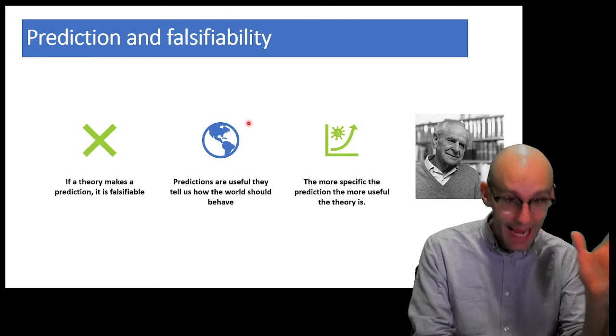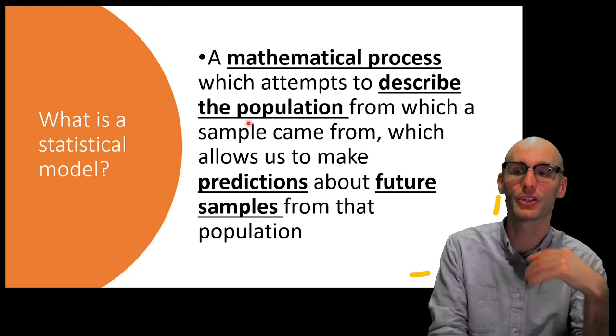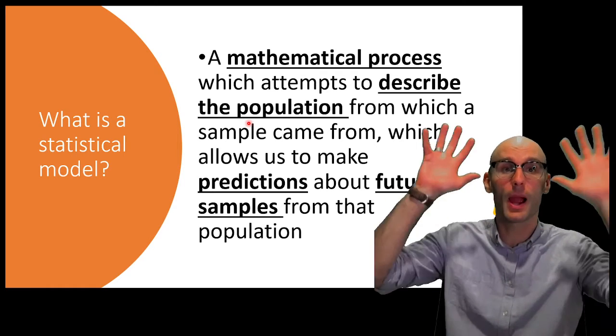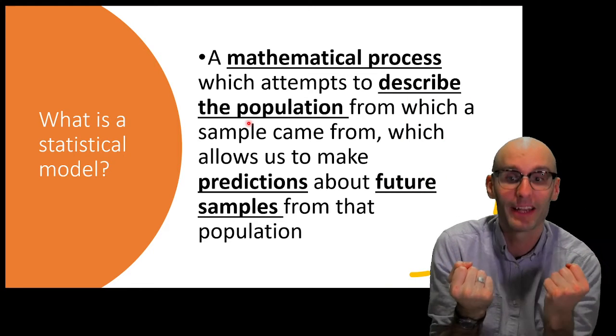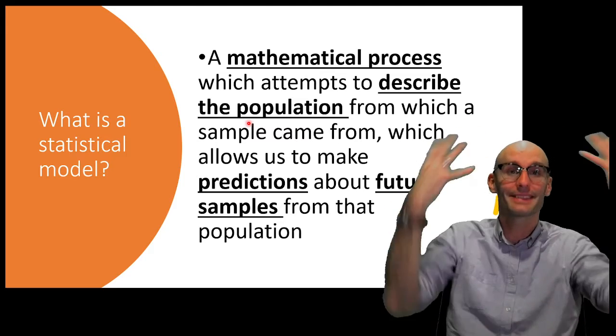If you make a prediction that doesn't come true, your theory has been falsified. Predictions should be useful. Tell us about how the world should behave. And the more specific the prediction, the more useful the theory is and the more falsifiable the theory is. So, stats is a statistical process about making predictions. A statistical model is a mathematical process which attempts to describe the population from which your sample that you analyzed came from which allows us to make predictions about future samples.